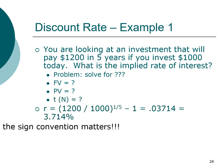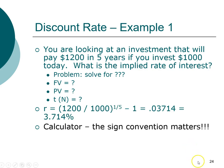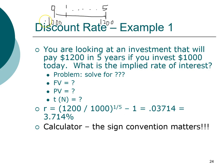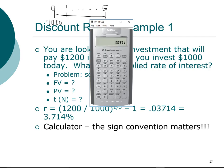If you use the financial calculator, you need to remember the sign convention. Looking at the timeline, the signs are not included in the formula approach, but they matter for the calculator. Typically, I make the present value the outflow, so I put a negative sign on the one thousand dollars — that's what we're putting into the investment. We are getting back twelve hundred dollars in the future, which is an inflow.